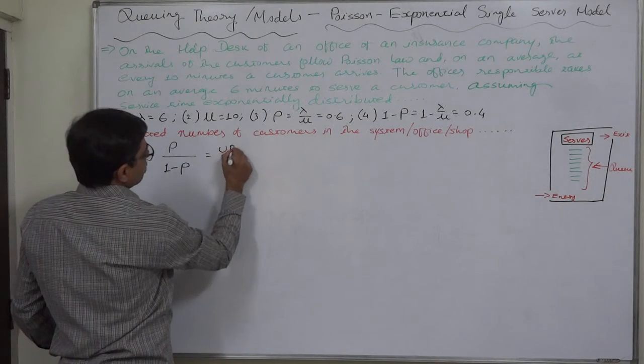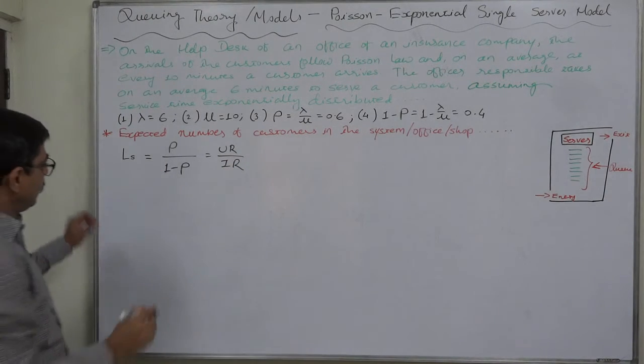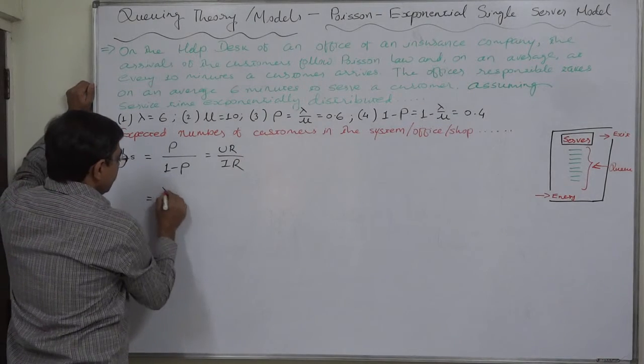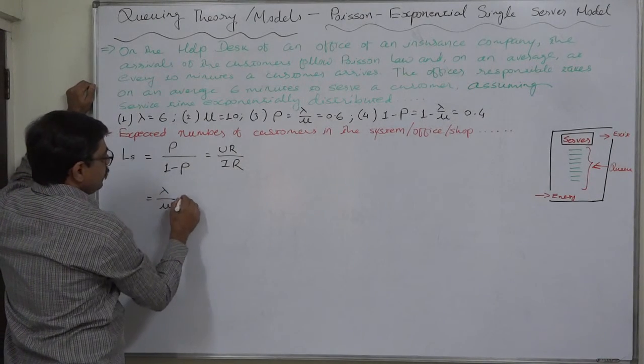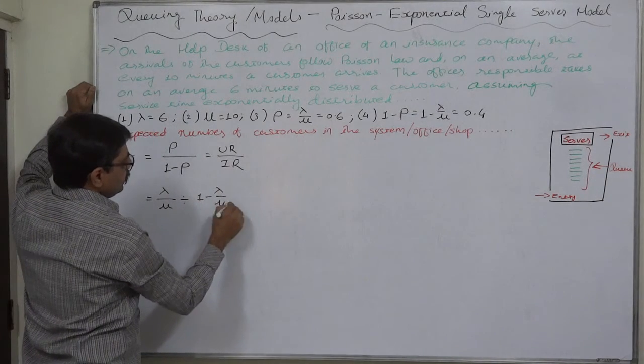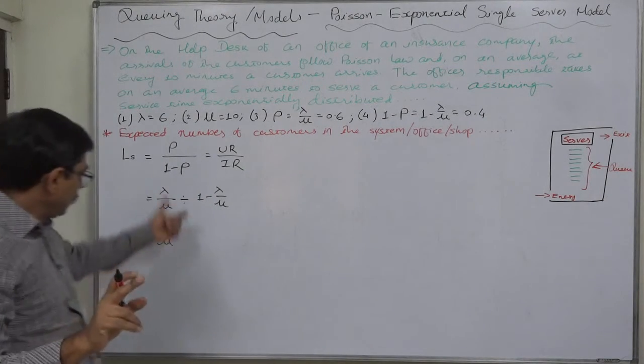Utilization rate divided by idle rate - this is the logic of the formula. Now what exactly is utilization rate? Lambda upon mu divided by idle rate, which is 1 minus lambda upon mu.